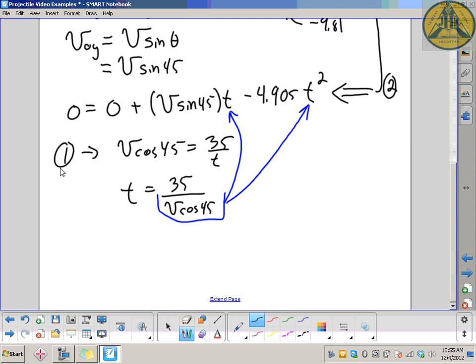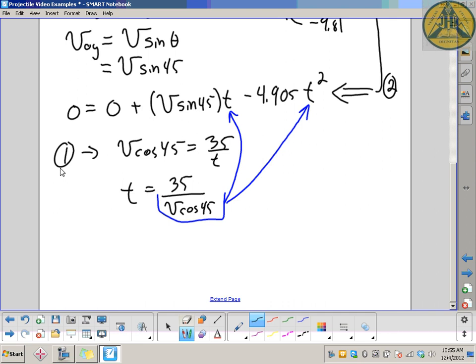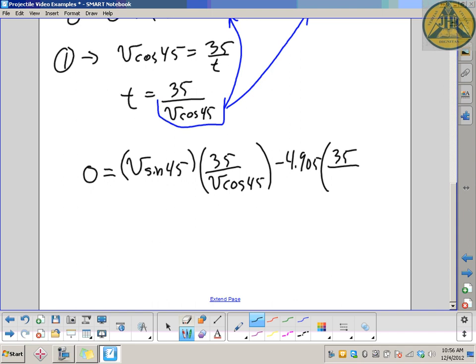Then, I'm going to have an equation with my only unknown variable being my magnitude of the velocity. So, it looks like 0 equals v sine 45 times t. Well, t is now 35 over v cosine 45 minus 4.905 times 35 over v cosine 45 squared. Now here's where some nice things happen. V on the top there, v on the bottom. Sine 45, cosine 45, evaluate to the exact same ratio. So, that's why I didn't work it out before. I knew it was going to simplify a little bit here in the end.